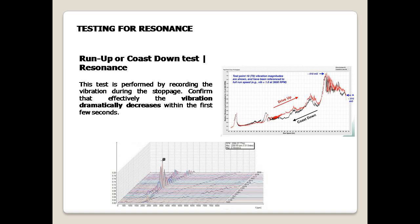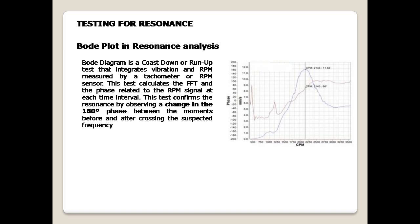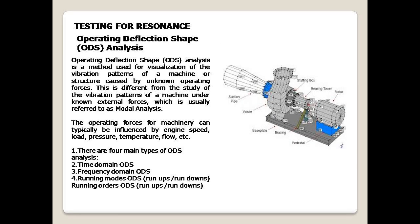This test is performed by recording the vibration during machine stoppage. Confirm that the vibration dramatically decreases within the first few seconds. The Bode plot is a coast-down or run-up test that integrates vibration and RPM measured by a tachometer or RPM sensor. This test calculates the FFT and the phase related to the RPM signal at each time interval. It confirms resonance by observing a 180-degree phase change between the moments before and after crossing the suspected frequency.